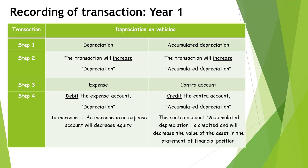The other affected account will be accumulated depreciation. The transaction will increase accumulated depreciation. The contra account, accumulated depreciation, is credited and will decrease the value of the asset in the statement of financial position. Remember the mantra that for every debit, there must be a corresponding credit.